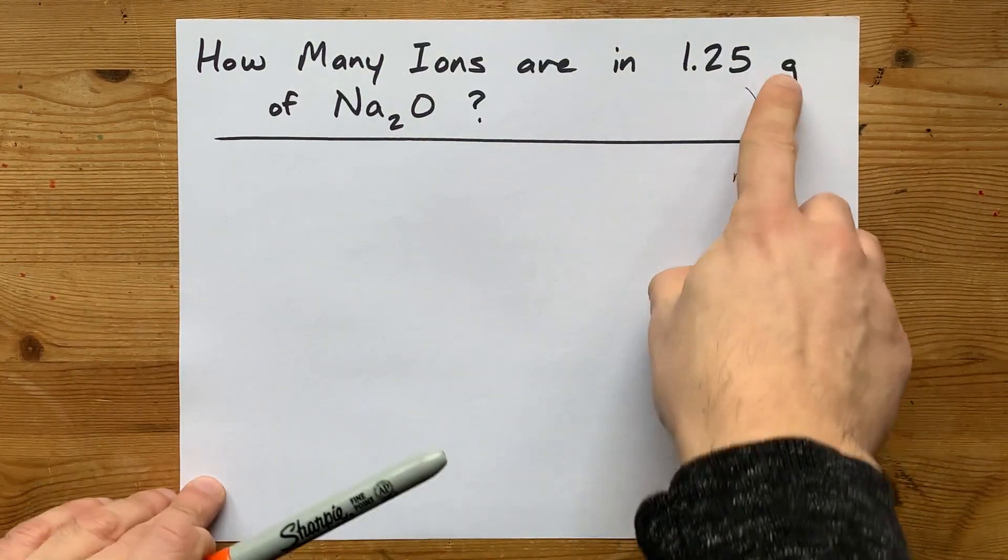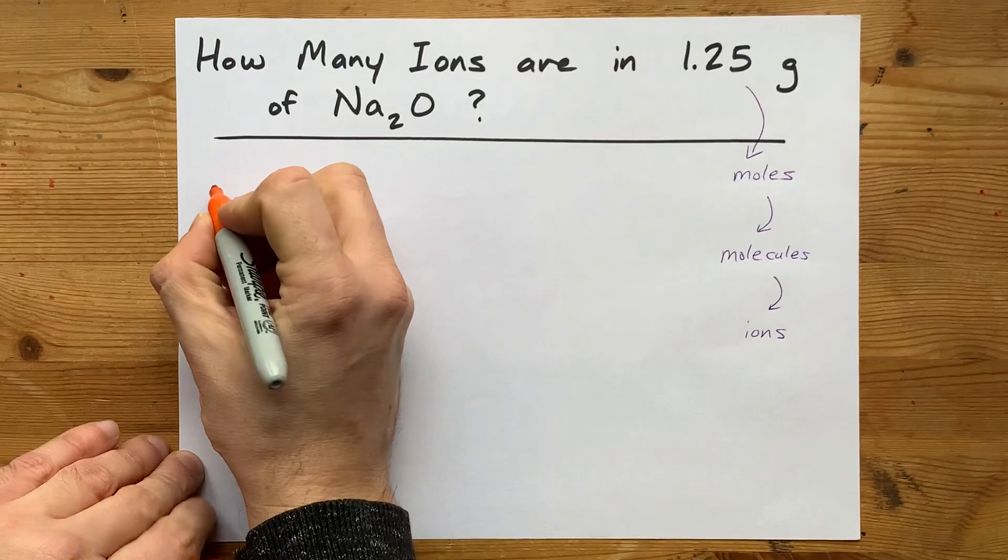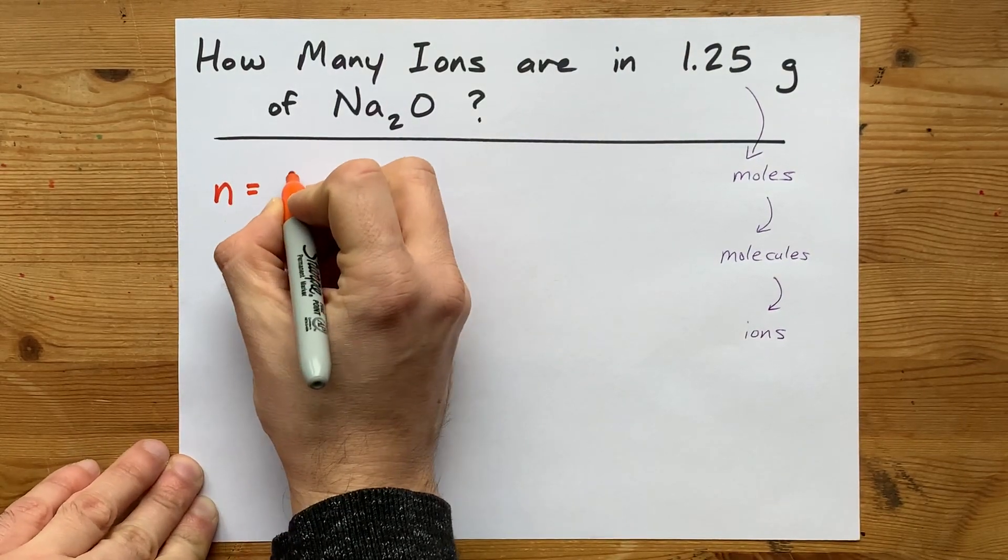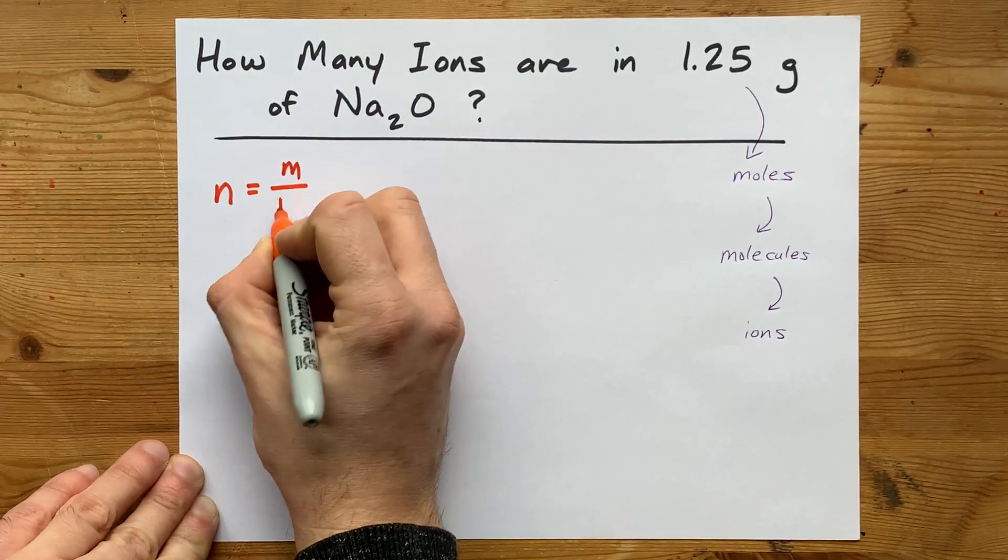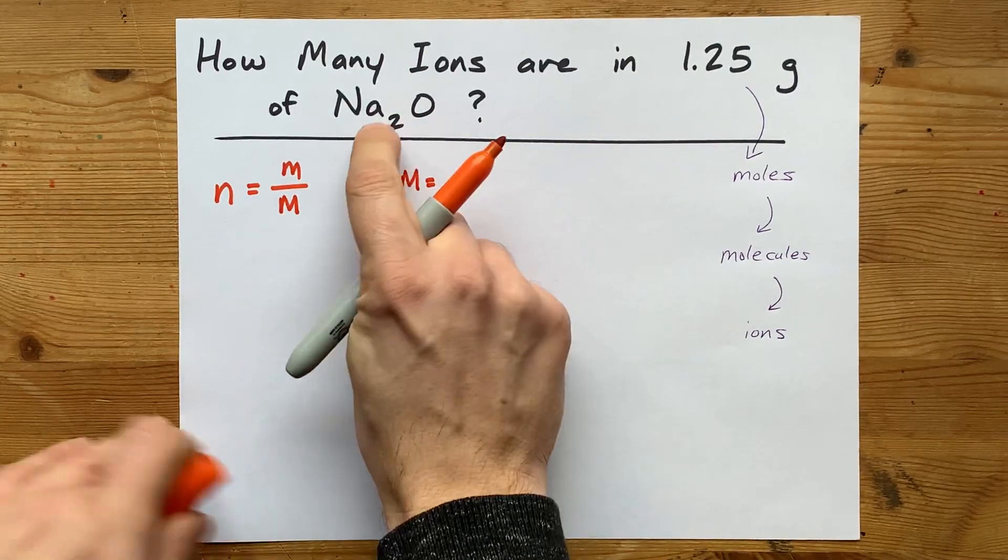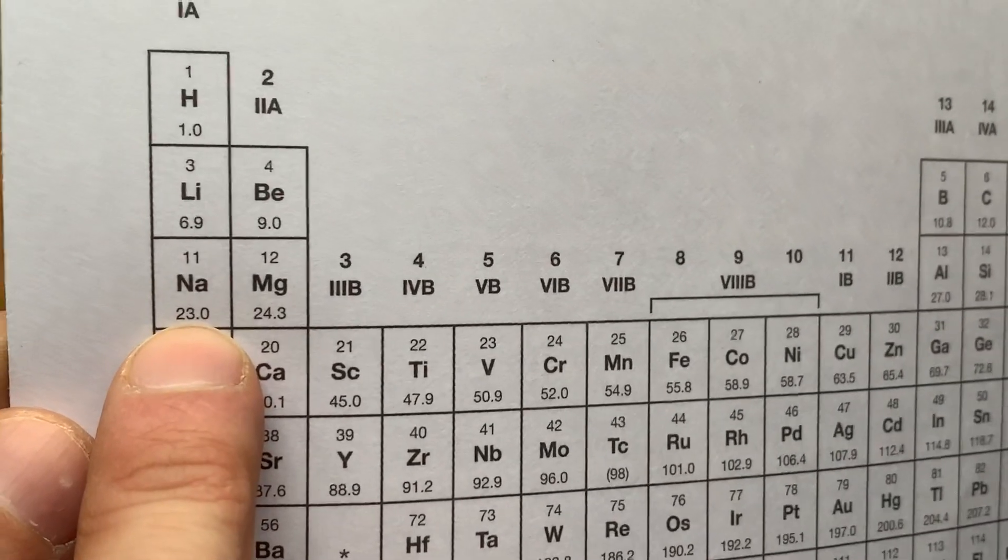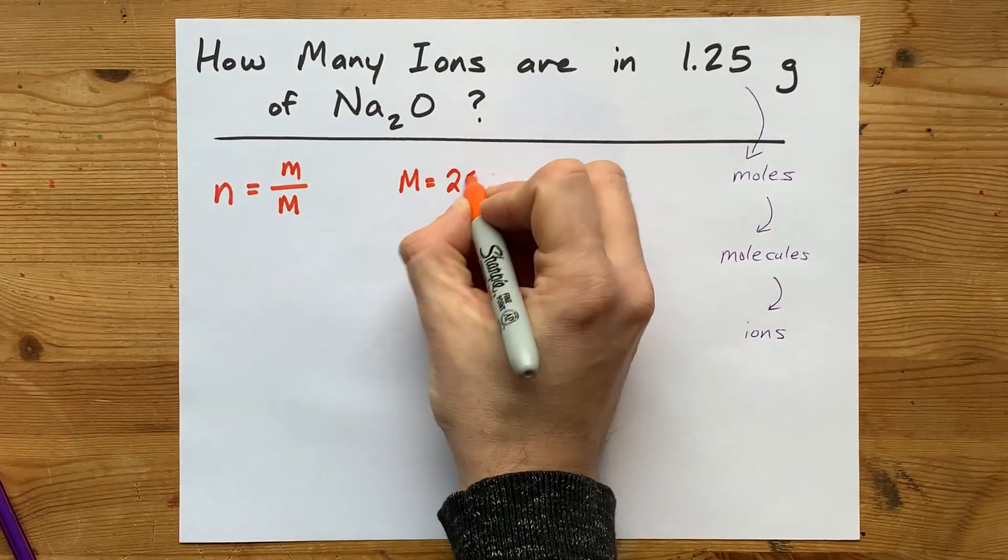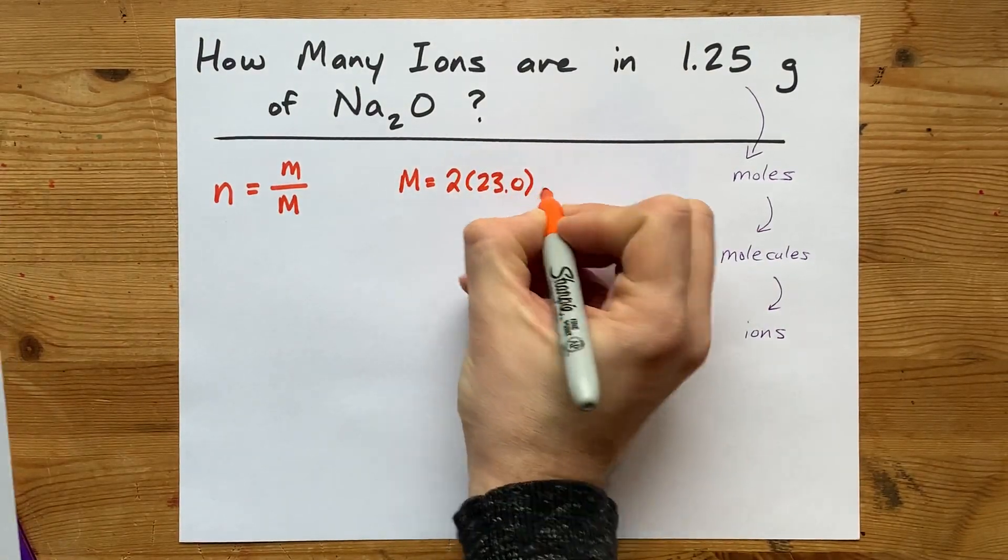To convert grams to moles, you're going to use moles equals mass divided by molar mass. But you need to calculate the molar mass of this compound. The molar mass of Na2O is going to be two of these Na's, which is 23.0 each,